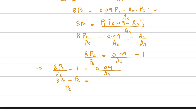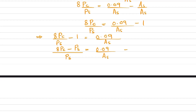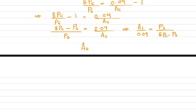Rearranging: 0.09/As = 8·Pc/Ps + 1. Inverting both sides: As/0.09 = Ps / (8·Pc + Ps). Therefore, the area of steel is: As = 0.09 × Ps / (8·Pc + Ps).